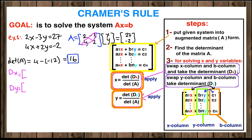X is found by switching the X column with the B column. So instead of the X column, we write 27 and negative 2, which is our B column, and the Y column stays the same.